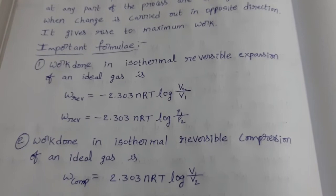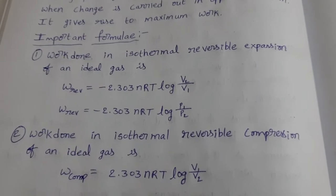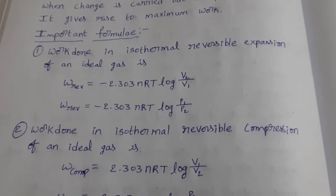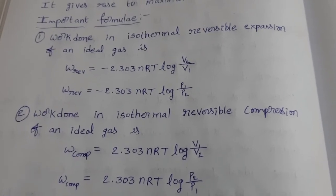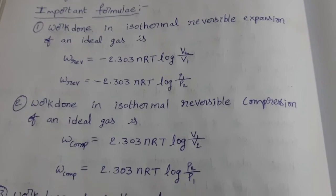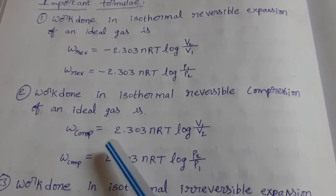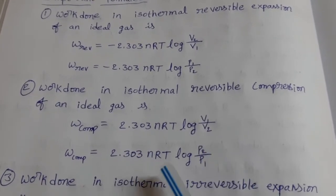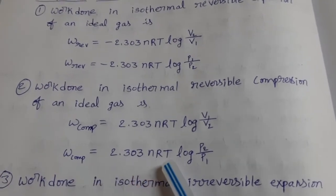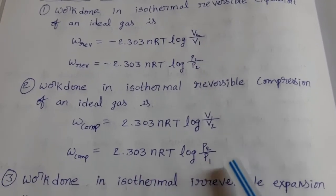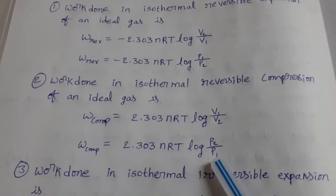Work done in isothermal reversible compression of an ideal gas — the above formula is for expansion, this one is for compression. W equals 2.303 nRT log of V1 by V2. The small difference: for expansion there is a negative sign with V2 by V1; for compression there is a positive sign with V1 by V2. In terms of pressure, the formula is 2.303 nRT log of P2 by P1.